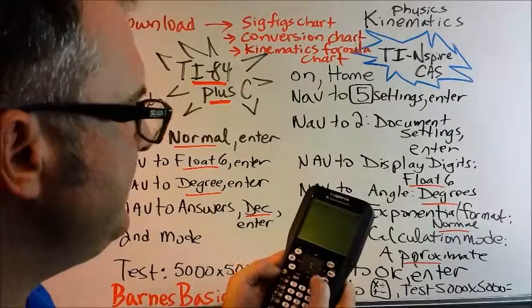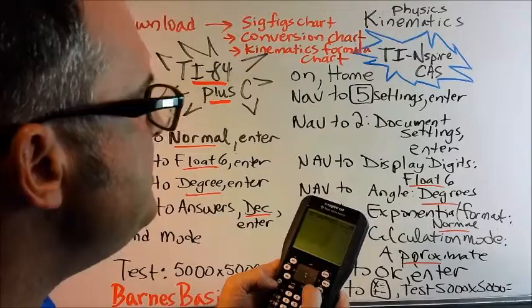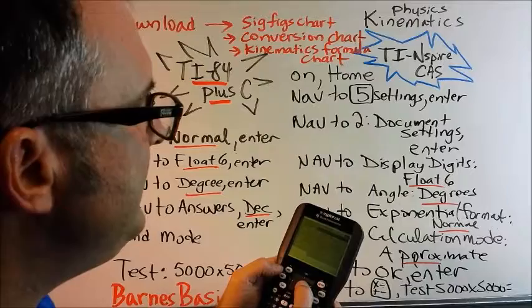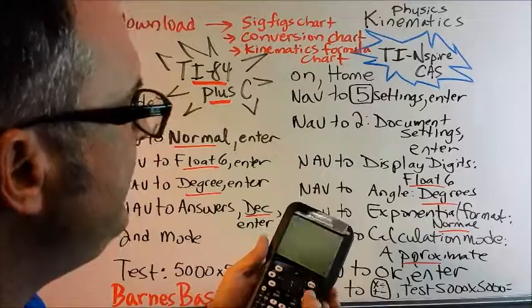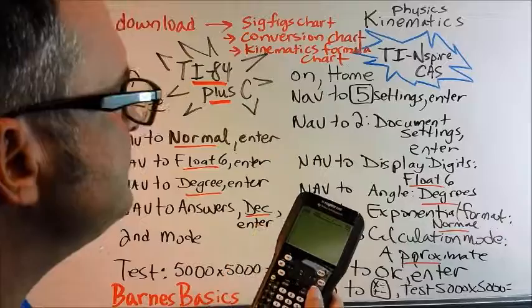Another thing that we can do while we're here is if we hit menu, and then go down to number, then we can choose number one, convert to decimal. And it will say answer, tab, decimal. And if you hit enter, it still goes to scientific notation. So we're going to be dealing with scientific notation on our TI Inspire. Good enough.